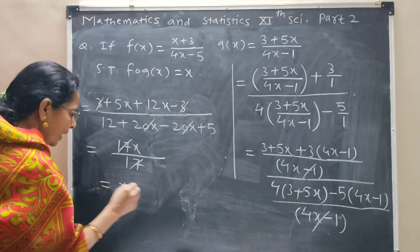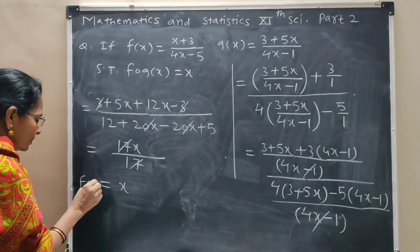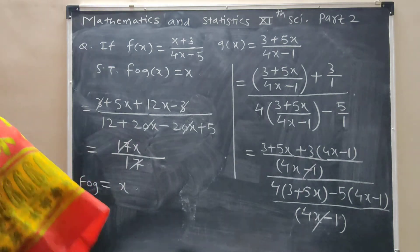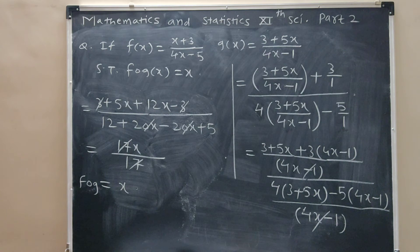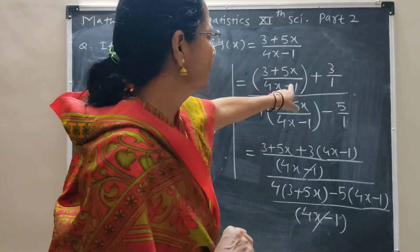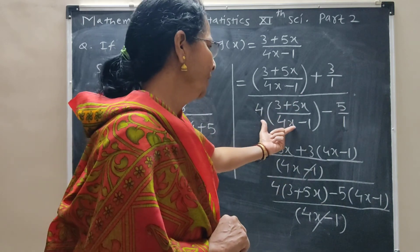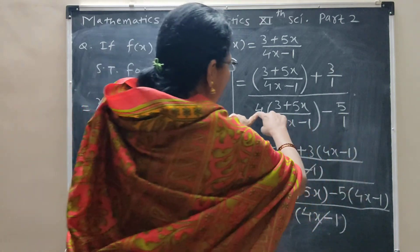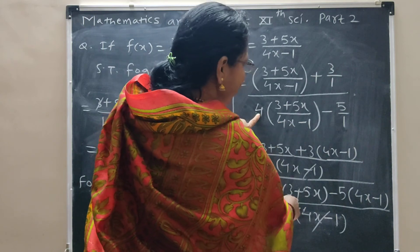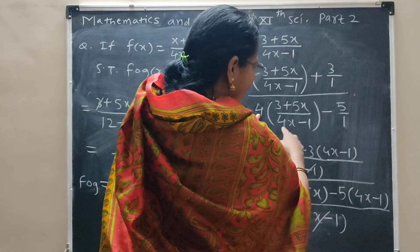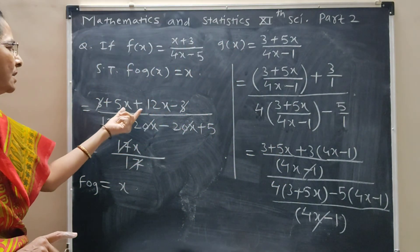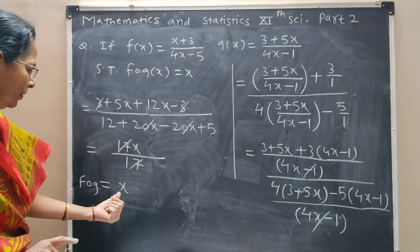The 17 gets cancelled, and we have fog of x equal to x. Therefore we say that f(g(x)) is equal to x. This is the correct answer. This step is important: take the cross product carefully. At the numerator it is easy, but at the denominator don't forget this 4. Take this total term and the 1 product. So 4 in bracket (3 plus 5x), minus sign, 5, and then (4x minus 1). Product is (4x minus 1), which gets cancelled. Terms cancel, 17x upon 17 gives answer x. So fog is equal to x.